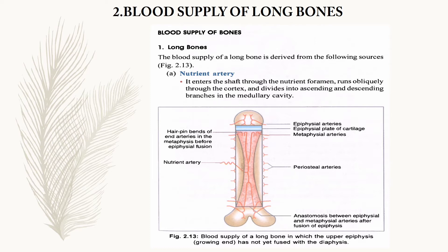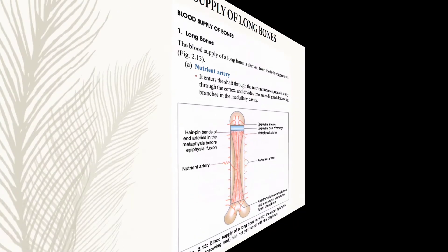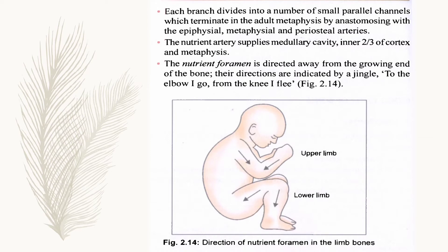The second question is the blood supply of long bones. It is provided by four arteries: nutrient artery, periosteal arteries, epiphysial arteries, and metaphysial arteries. First, draw the diagram from chapter 2, figure 2.13. The nutrient artery enters the shaft through the nutrient foramen, runs obliquely through the cortex, and divides into ascending and descending branches in the medullary cavity. It supplies the medullary cavity, two-thirds of the cortex, and metaphysis. The nutrient foramen is directed away from the growing end of the bone.